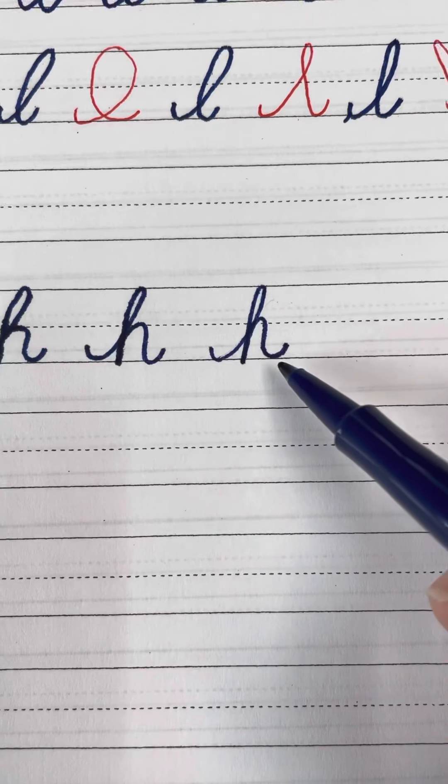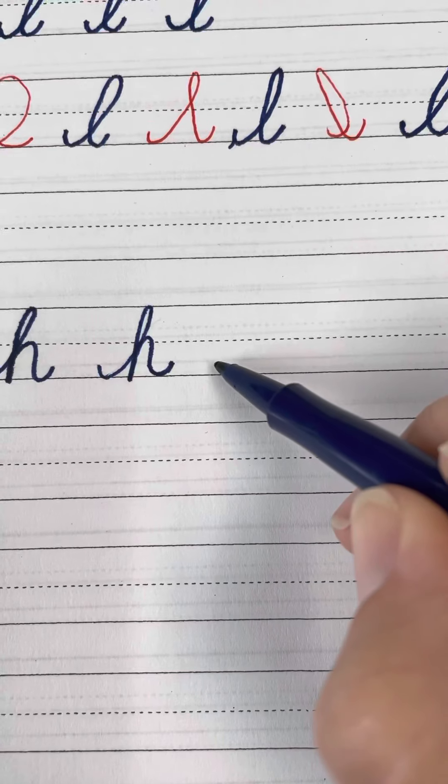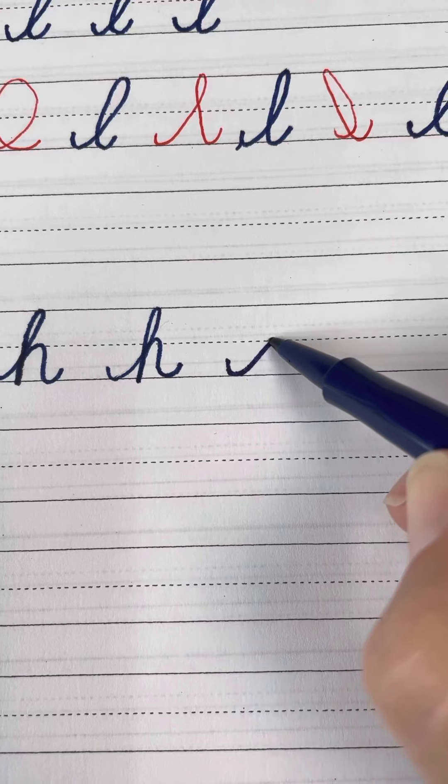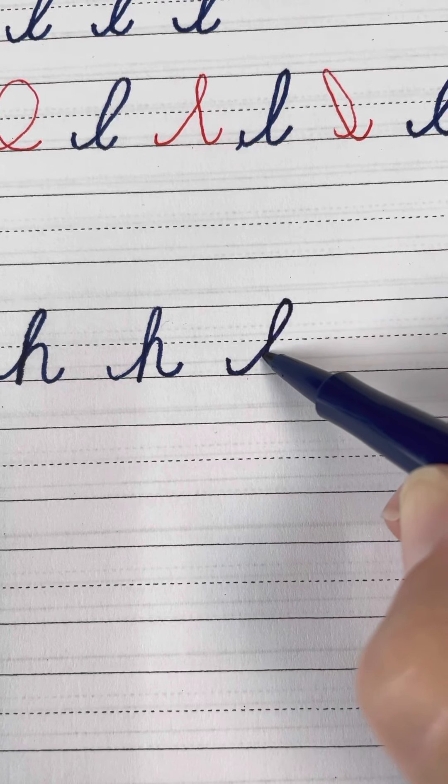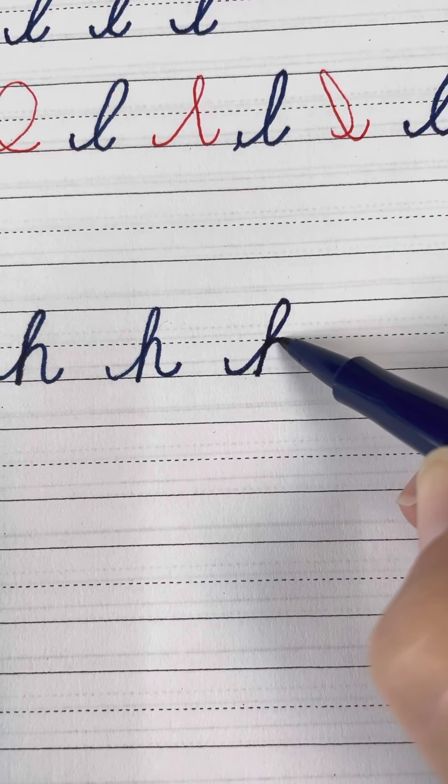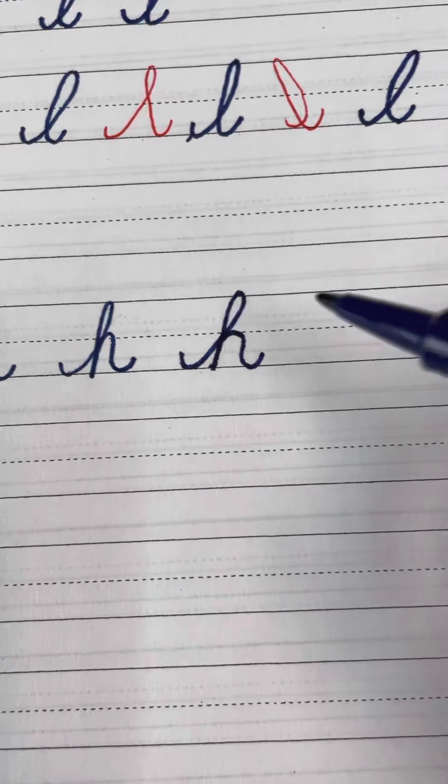See how I start with a swoop and end with a swoop? Swoop forward, touch the top, touch straight down, retrace to the dotted line, and make your hill.